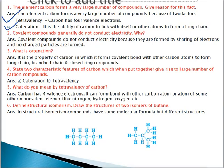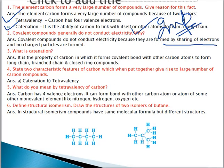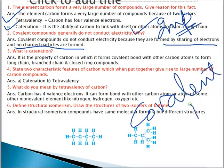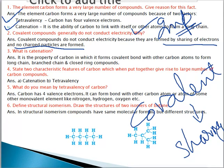Next question: covalent compounds generally do not conduct electricity. Why? This question is also important because many times in the board exam this question has been asked. Covalent compounds are formed by the sharing of electrons. Since covalent compounds are formed by the sharing of electrons, no charged particles are formed — meaning positively and negatively charged particles will not be formed. So covalent compounds will not conduct electricity.